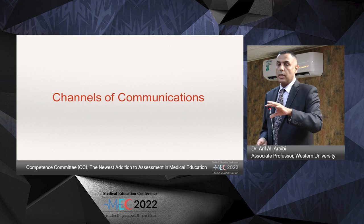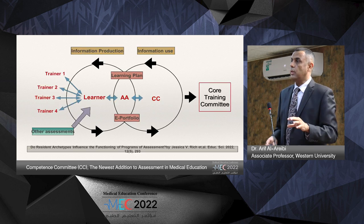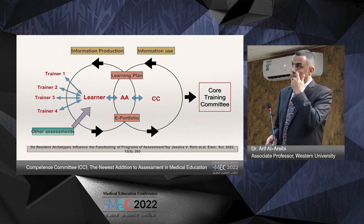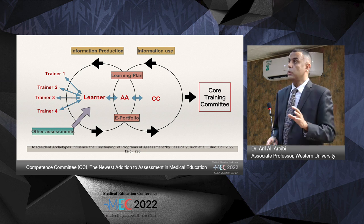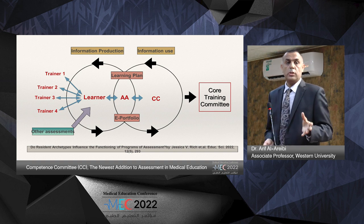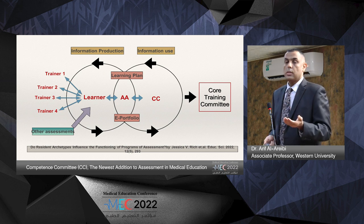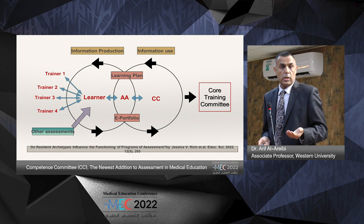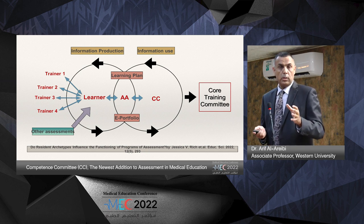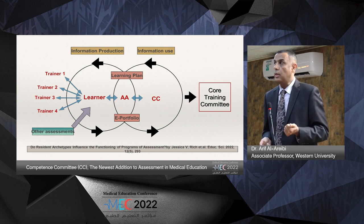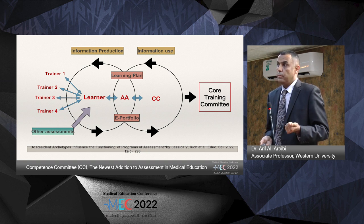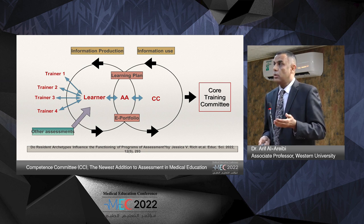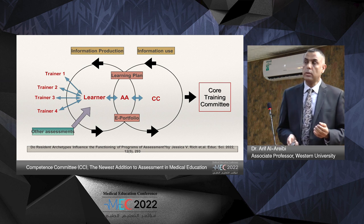This diagram shows where the Competence Committee fits in the structure. The Competence Committee is on one side, the learners group on the other, and between them are the academic advisors — with communications going back and forth. The trainers or faculty have direct interactions, and the more you have, the better it is for the committee. Other assessments — logbooks, summative written exams — all feed into the same circle. The first circle is information production; when it comes to the Competence Committee, that's where the information is used. The portfolio goes to the committee and returns to the learning circle with a learning plan.